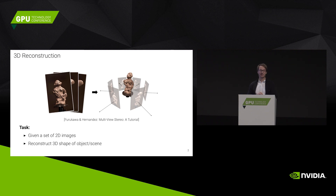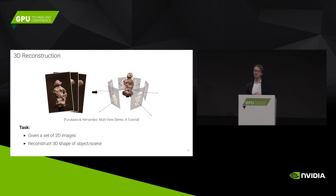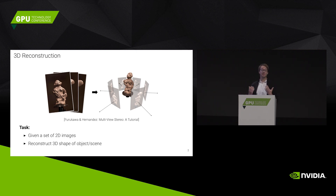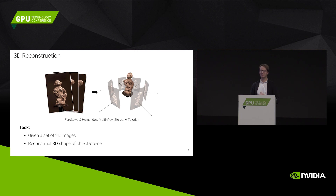3D reconstruction is the inverse problem of computer graphics — the forward rendering process. Because a lot of the information available in 3D is lost after the projection process, it's a highly ill-posed problem. There are a lot of ambiguities when you do 3D reconstruction, so you need to use a lot of prior assumptions about the world we live in. The question is how can we encode these prior assumptions?